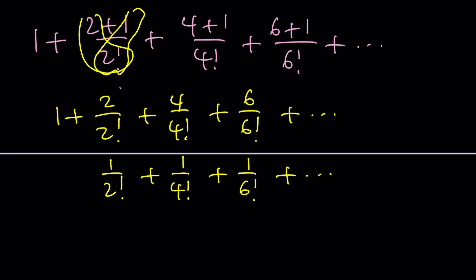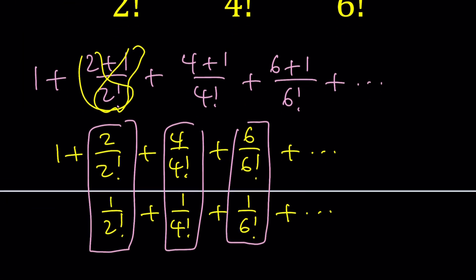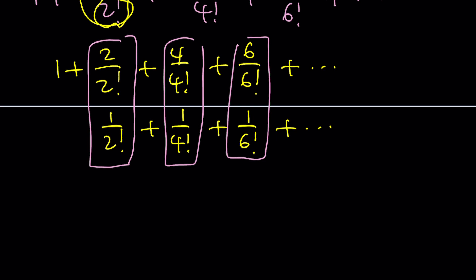Now when you add these in columns you're going to get 3 over 2 factorial, 5 over 4 factorial, 7 over 6 factorial and so on and so forth. We're going to get the same sum right?